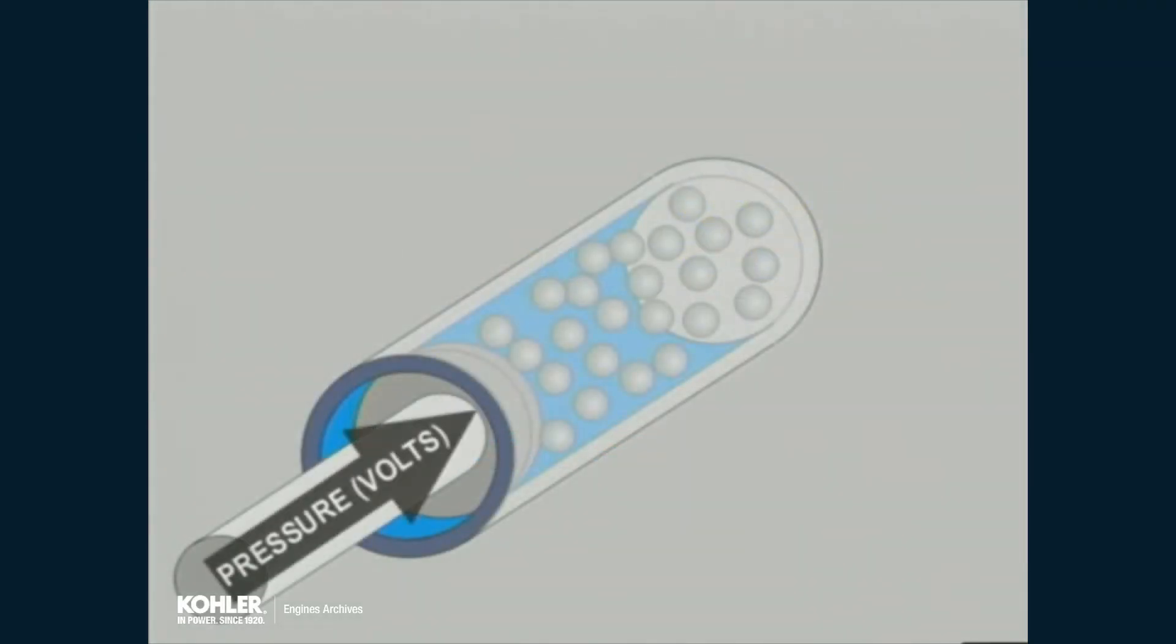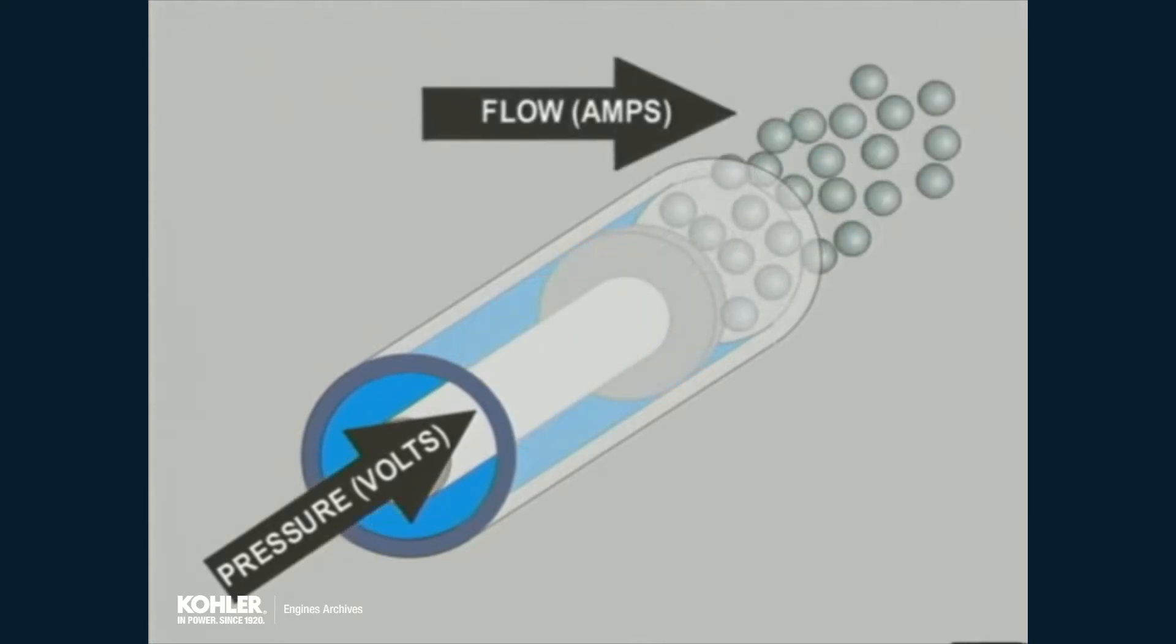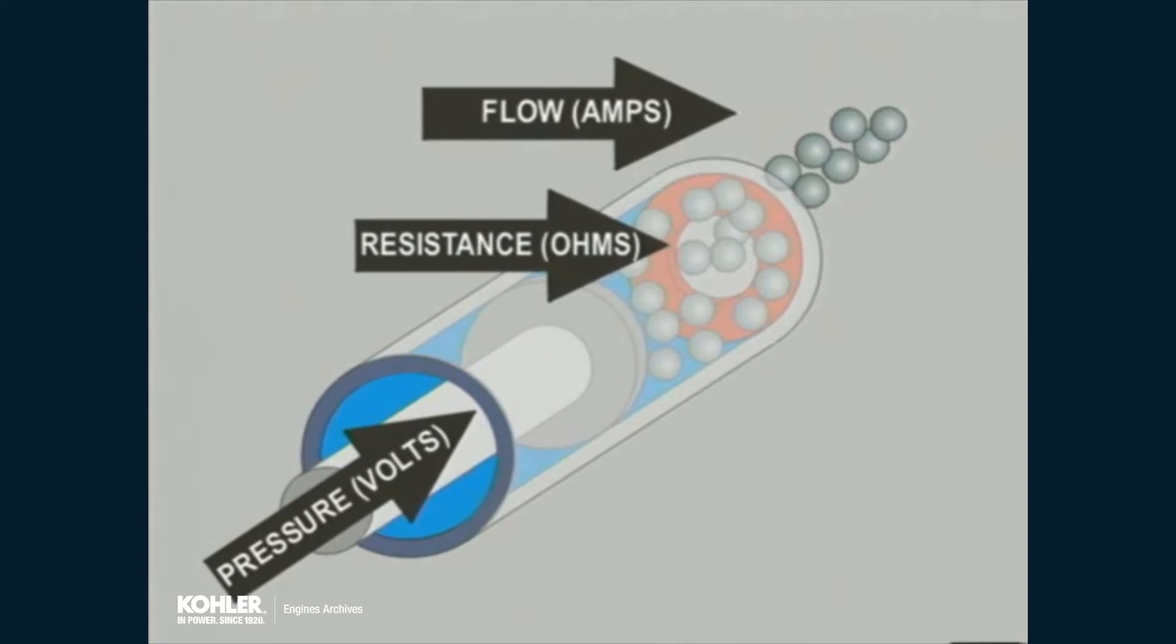The force or pressure of the electrons trying to push through the conductor is referred to as voltage, measured in volts. The rate or volume of current flow is known as the amperage, measured in amperes, or just amps for short. Anything that opposes or reduces the current flow is referred to as resistance, which is measured in ohms.